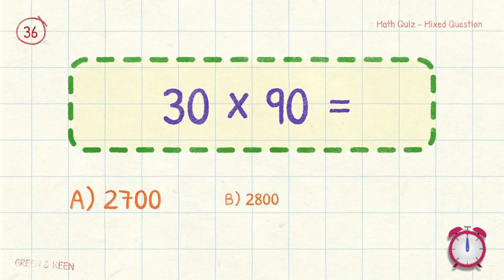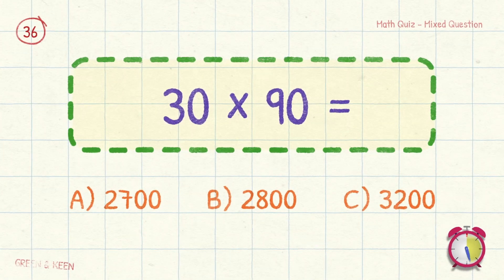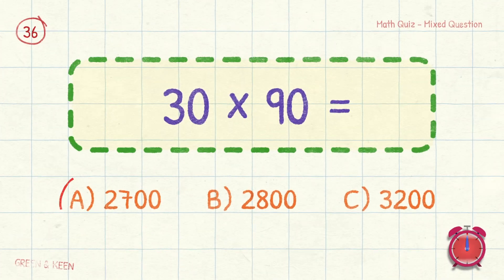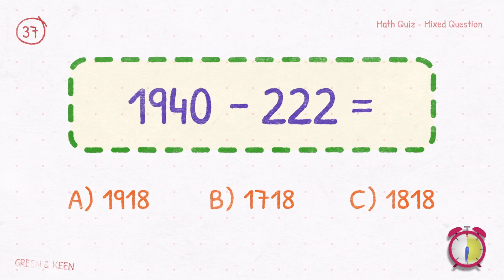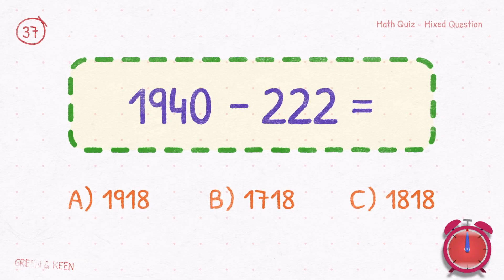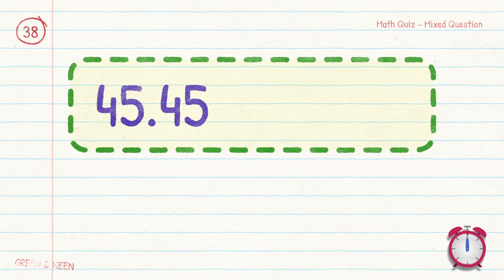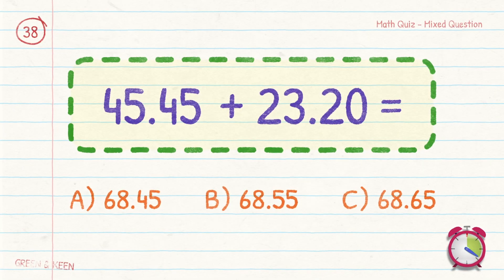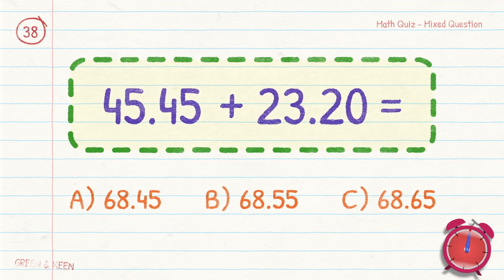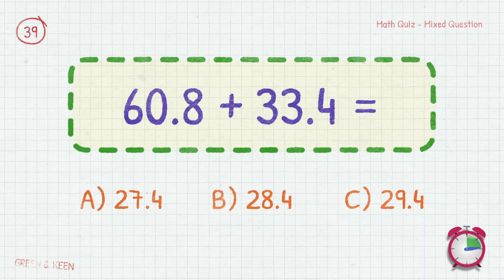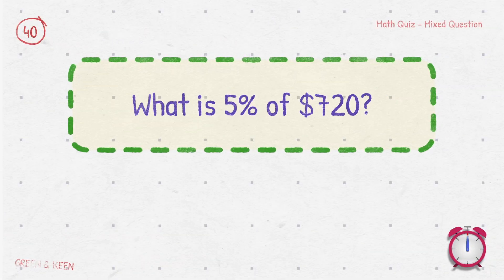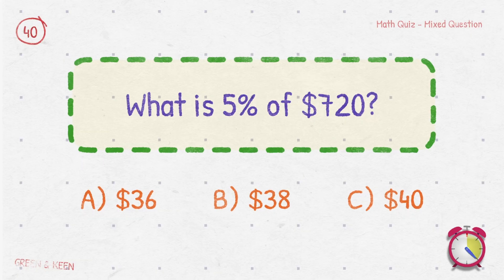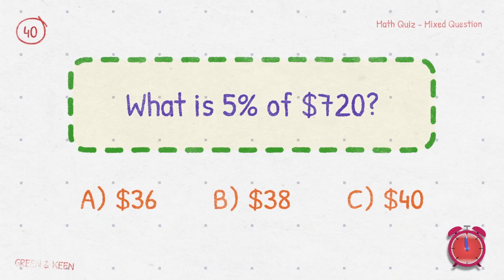5,400 plus 345 equals? 5,745. 30 times 90 equals? 2,700. 9,400 minus 222 equals? 9,178. 60.8 minus 33.4 equals? It's 27.4. What is 5% of $720? $36.